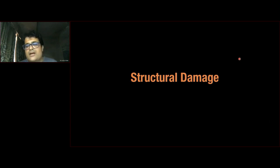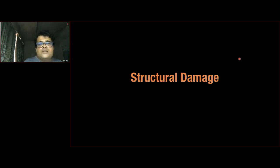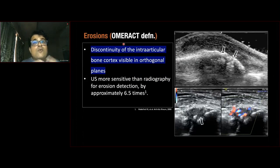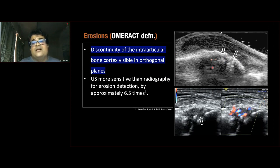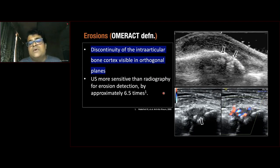Now for structural damage: cartilage loss, bone erosions, joint space narrowing, and tendon rupture. OMERACT defines cortical erosion as a discontinuity of intra-articular bone cortex visible in orthogonal planes — you must scan the bone in both short and long axis. This is important because nutrient foramina may appear as discontinuity in only one plane and could be falsely labeled as an erosion. According to the literature, ultrasound is approximately 6.5 to 7 times more sensitive in detecting early erosions compared to plain X-rays.